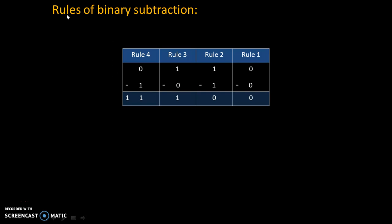Before studying those cases, let's understand the rules of binary subtraction. Rule 1: 0 minus 0 equals 0. Rule 2: 1 minus 1 equals 0. Rule 3: 1 minus 0 equals 1. Rule 4: 0 minus 1 — we cannot subtract 1 from 0, so we take a BORROW, making the rule 0 minus 1 equals 1 with BORROW 1. Rule 4 is important — remember it.